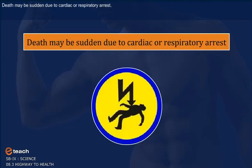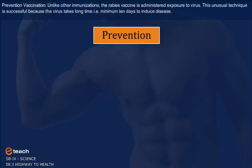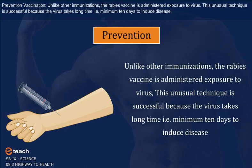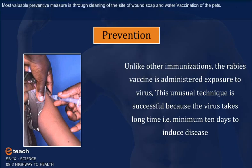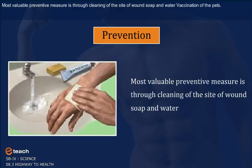Death may be sudden due to cardiac or respiratory arrest. Prevention: Unlike other immunizations, the rabies vaccine is administered after exposure to the virus. This unusual technique is successful because the virus takes a long time — a minimum of 10 days — to induce disease. The most valuable preventive measure is thorough cleaning of the wound site with soap and water.